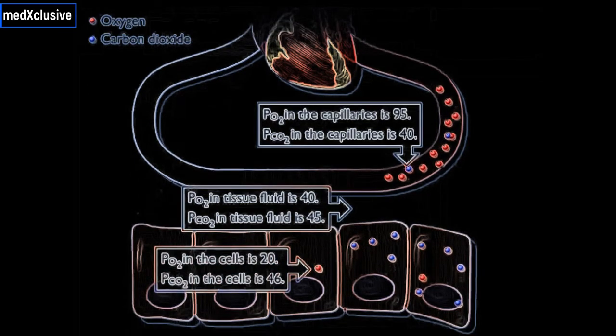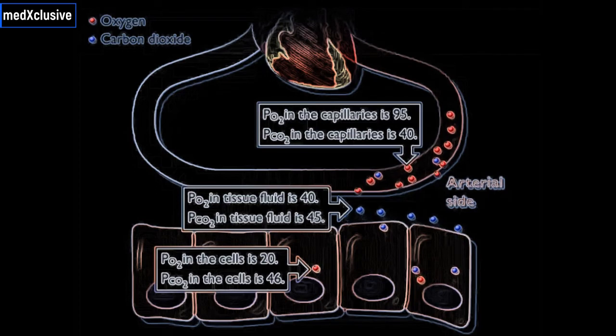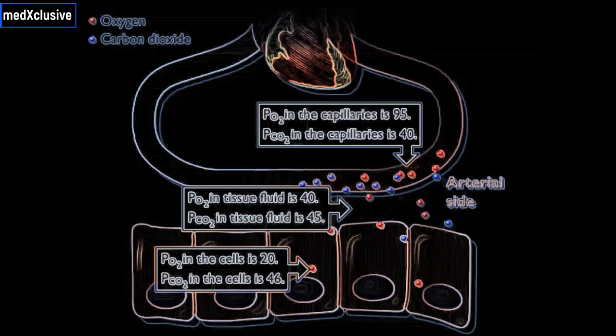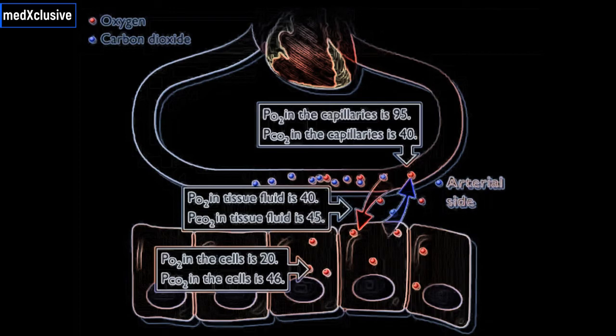Some oxygen was removed from the blood to nourish lung tissue. Therefore, the PO2 in arterial blood leaving the heart is 95. Oxygen diffuses out of the arterial ends of tissue capillaries into the tissue fluid, then into the cells, and carbon dioxide diffuses out of the cells into the tissue fluid, then into the blood because of differences in partial pressures.